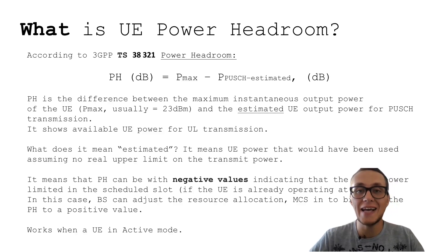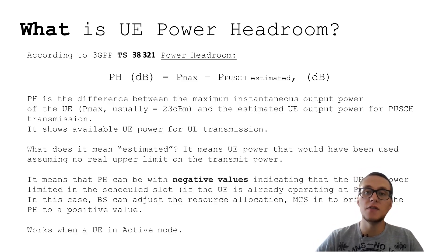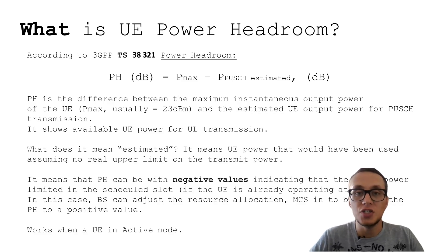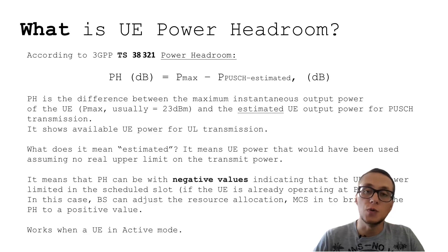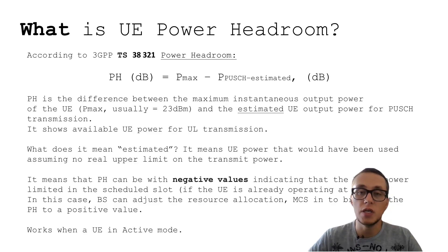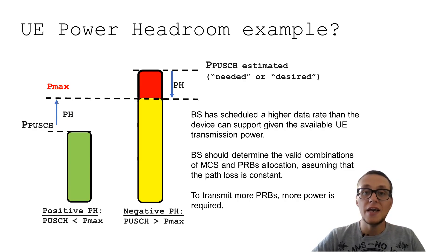If we look at this equation, we can see that power headroom can have negative values, indicating there is no available power in the current slot. In this case, the base station may give orders to adjust the number of allocated PRBs, or to reduce the modulation and coding scheme to bring up the uplink power of the UE. Power headroom is about active mode.